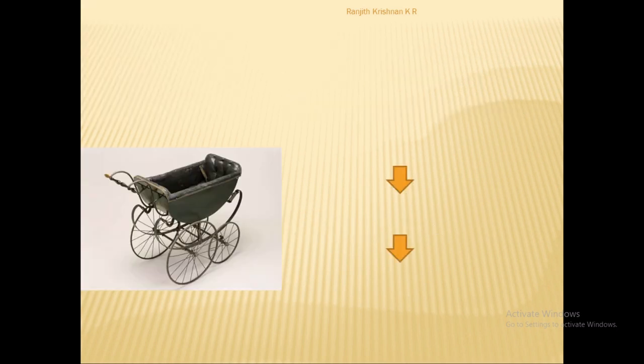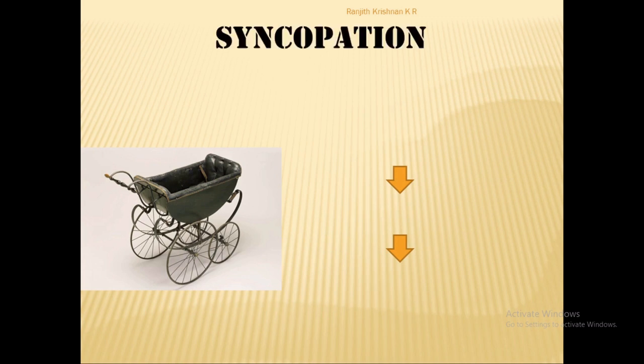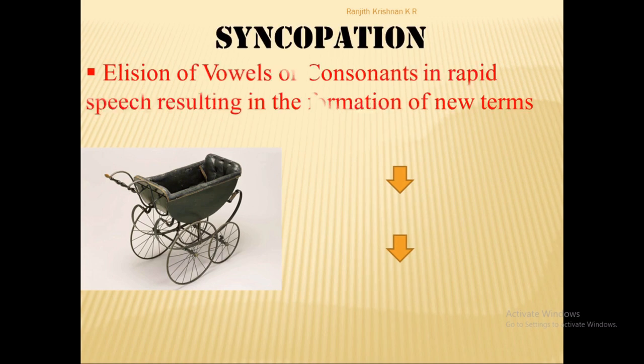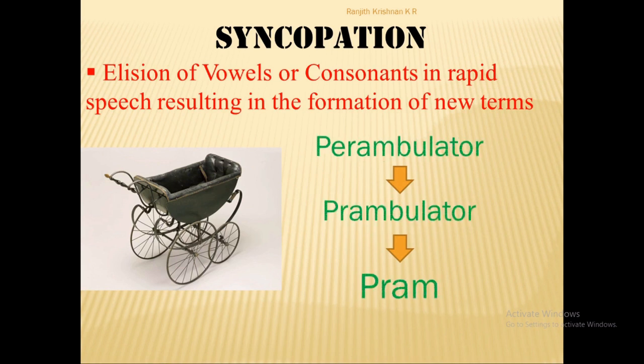The next process of word formation is syncopation — the elision of vowels or consonants in rapid speech, resulting in the formation of new terms. When we speak fast, there is a tendency to drop certain vowels or consonants. For example, 'perambulator' was shortened to 'pram.'